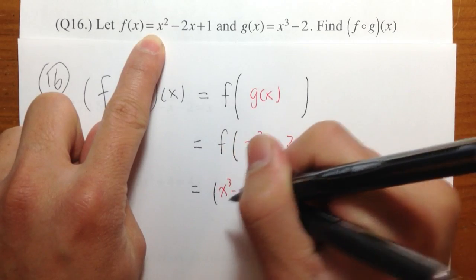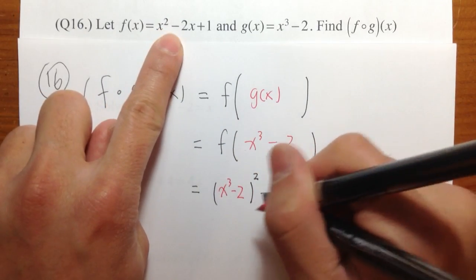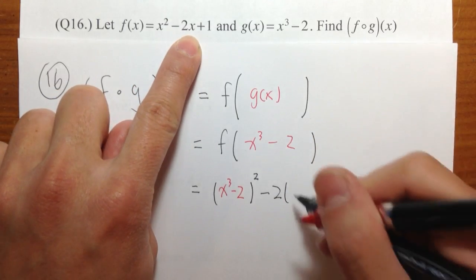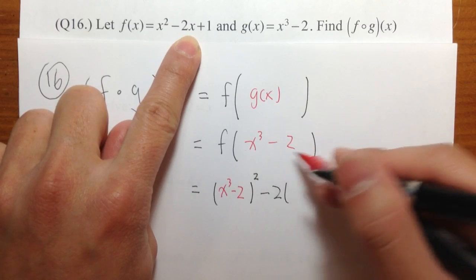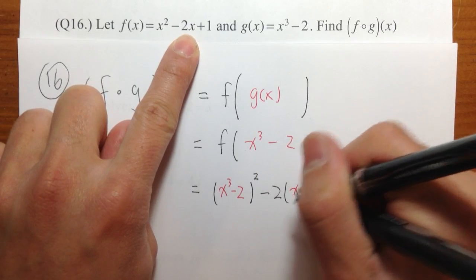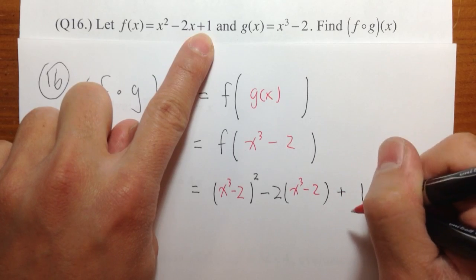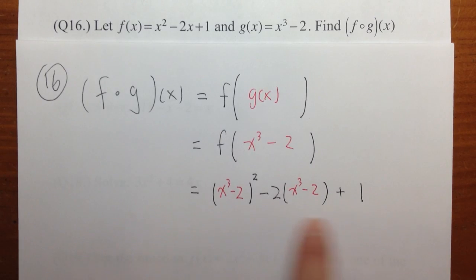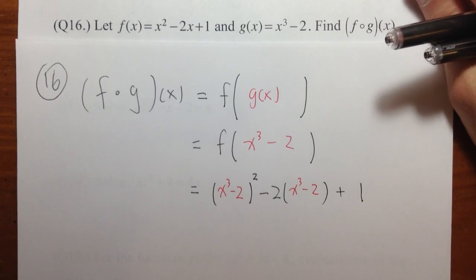x to the third power minus two, raised to the second power, and then minus two — and then I see the x again from the function f — so in place of x we put x to the third power minus two, and then plus one. Don't just leave the answer like this. We want to combine the terms and simplify as much as we can.